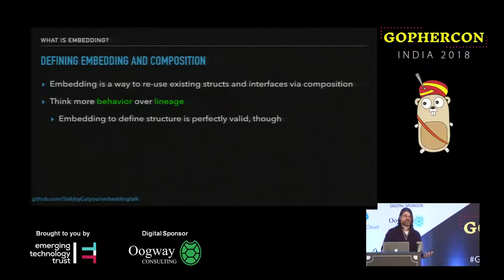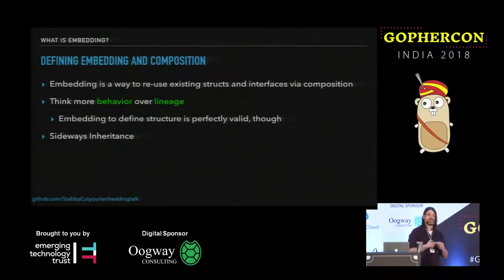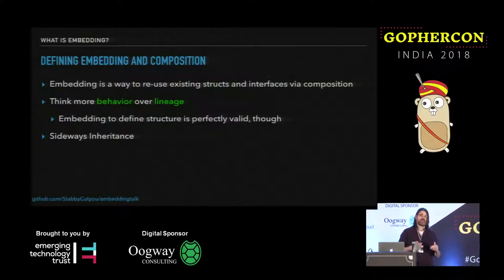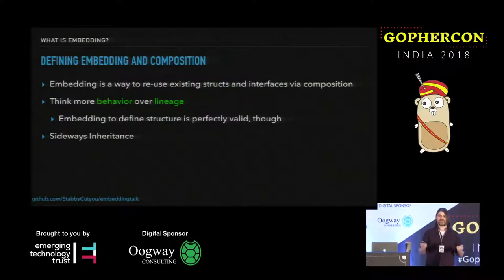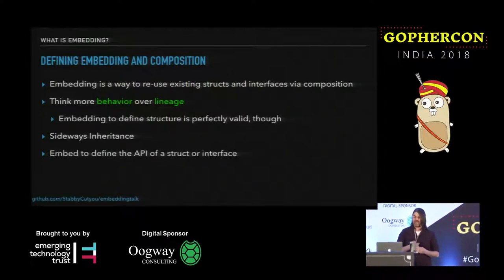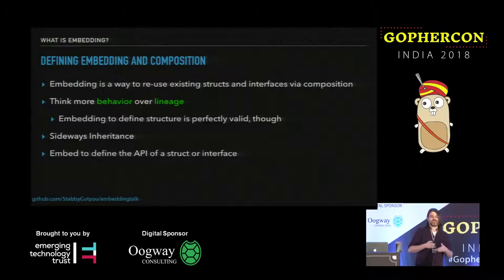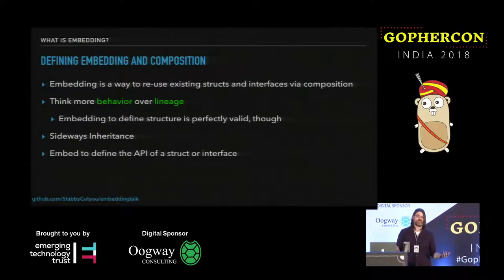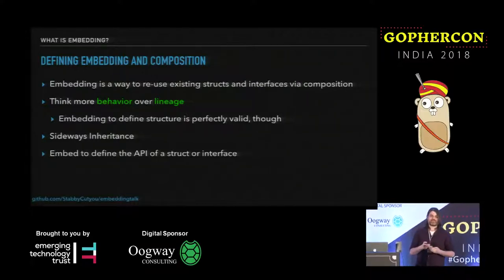Embedding to define structure is perfectly valid, however. Another way to think about this — if you come from a language like Ruby that has modules with what they call sideways inheritance — it's less about a straight top-to-bottom inheritance model and more about gathering code you like and grabbing it in sideways. You can also use embedding to define the API of a struct or interface, gradually building up from first principles all the different pieces of the API you wish to expose.